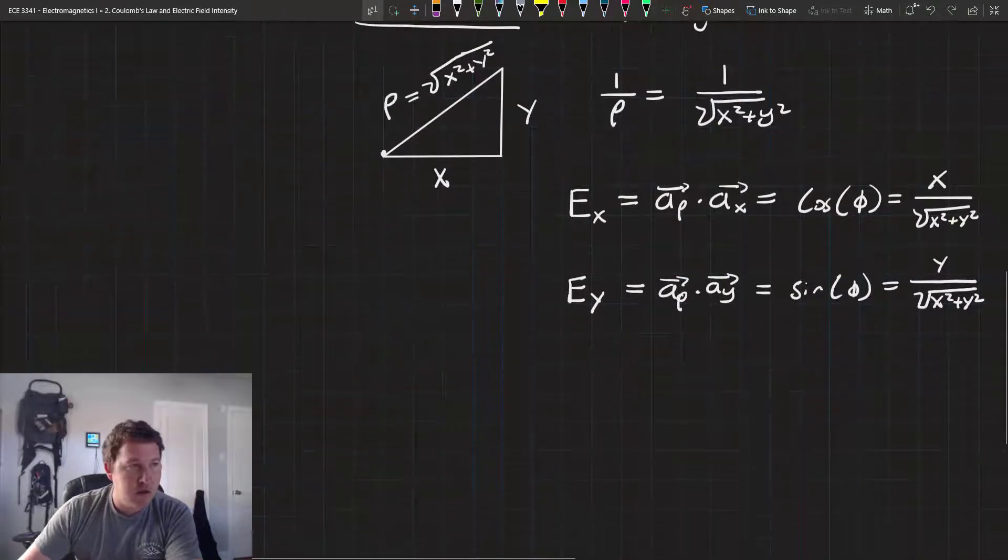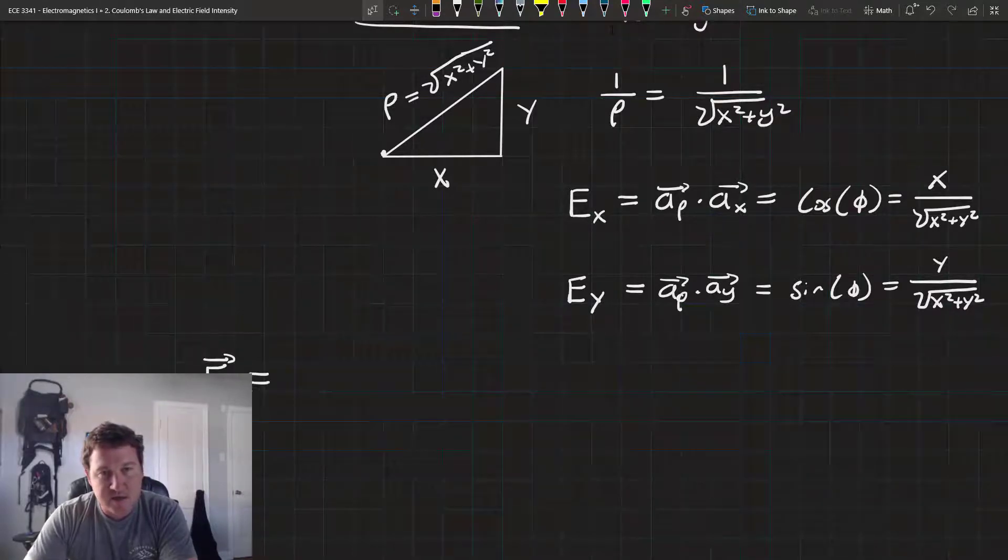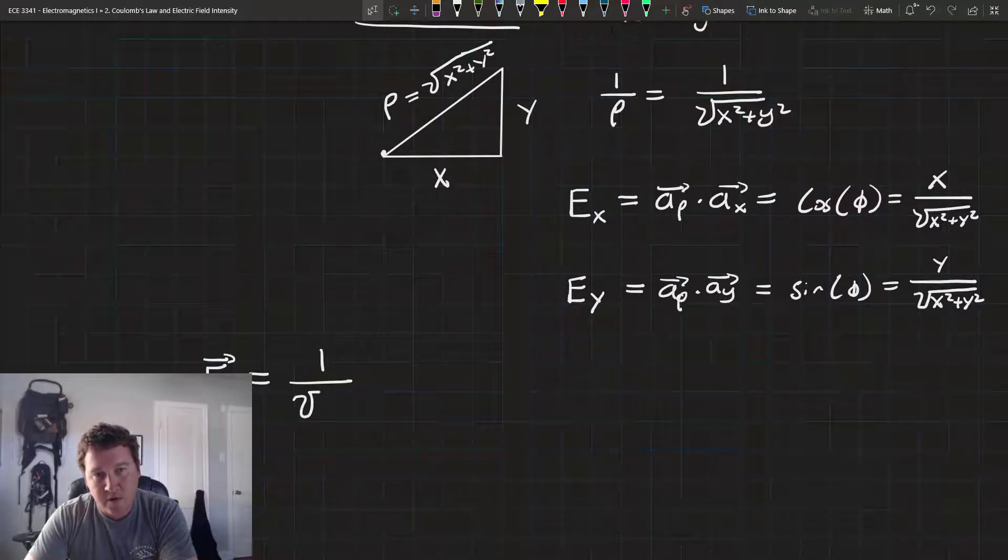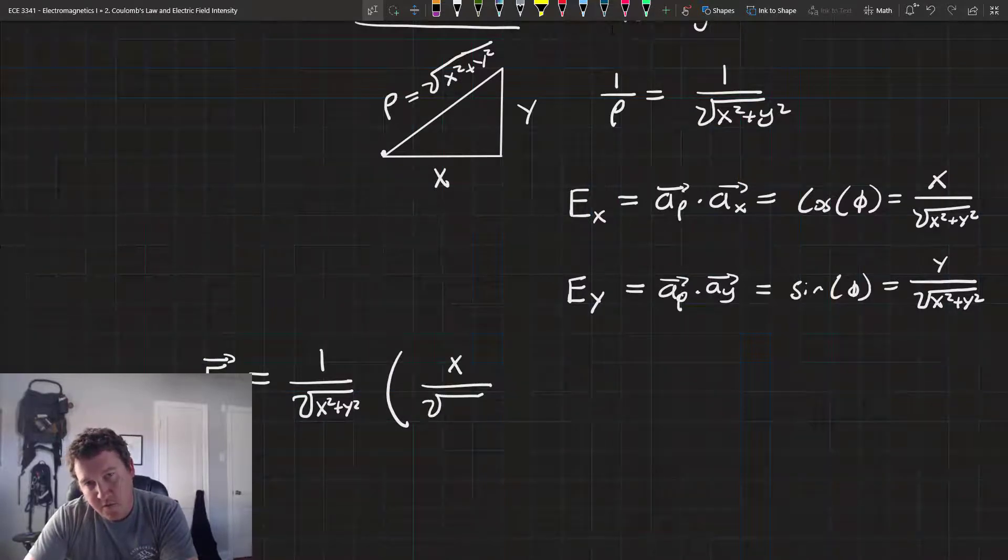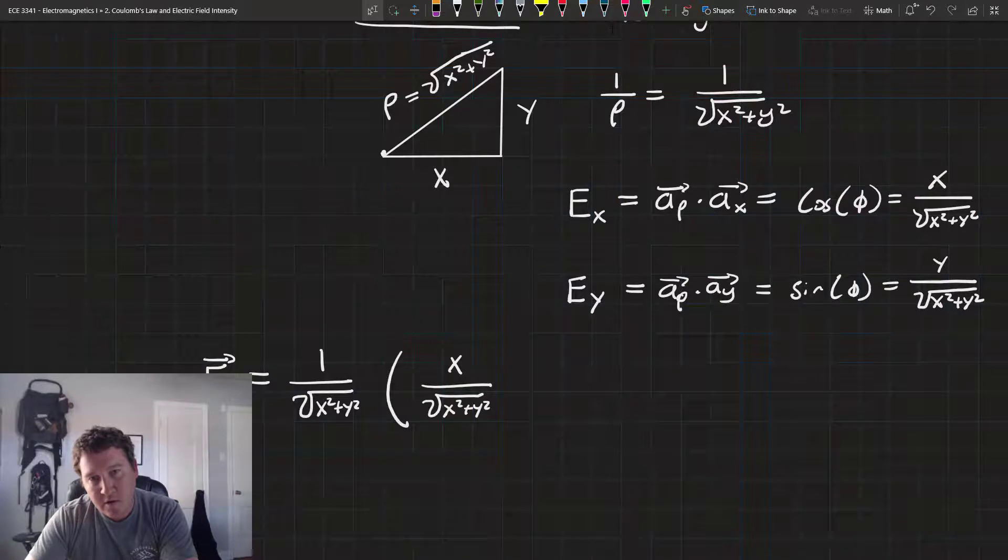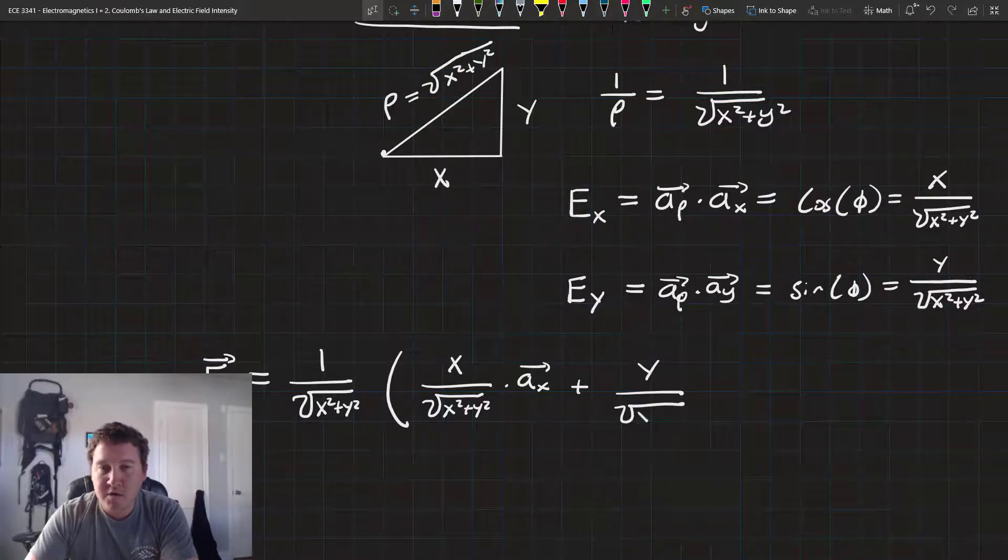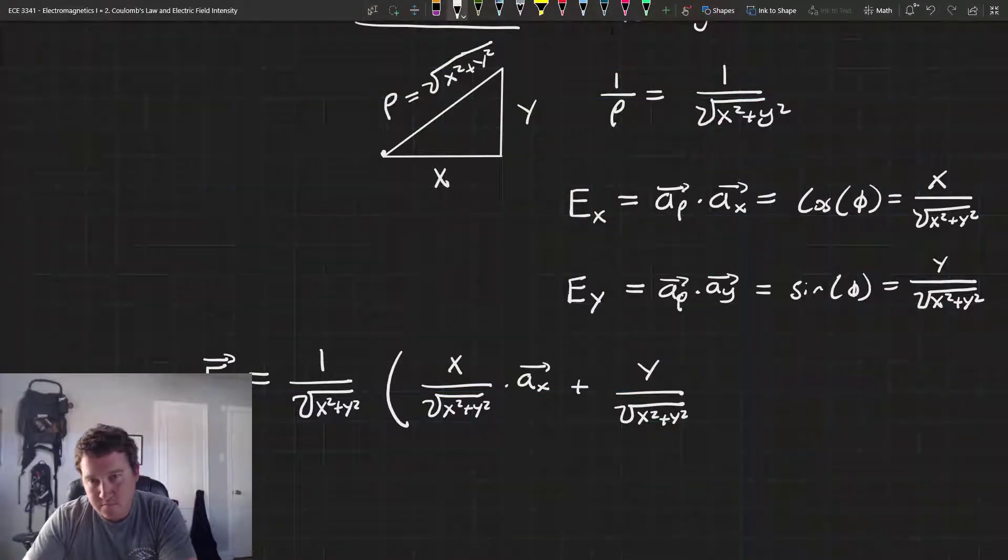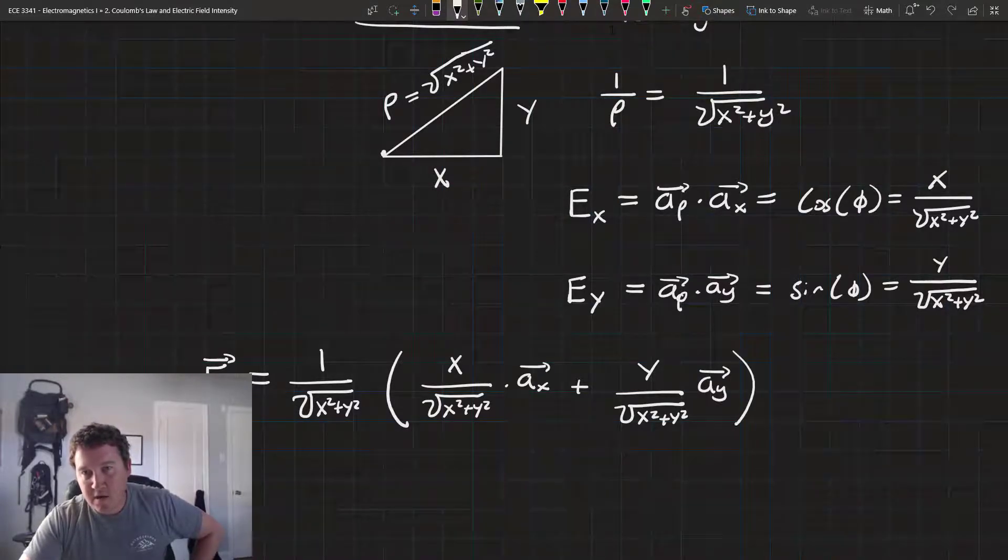So when we put our rectangular electric field together, we're going to see that e is equal to 1 over the square root of x squared plus y squared times x over the square root of x squared plus y squared times the unit vector a sub x, plus y over the square root of x squared plus y squared times the unit vector a sub y.